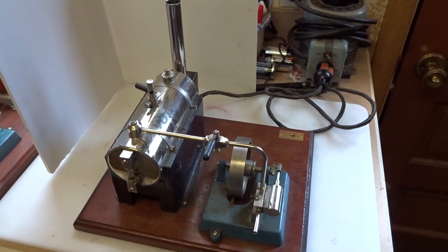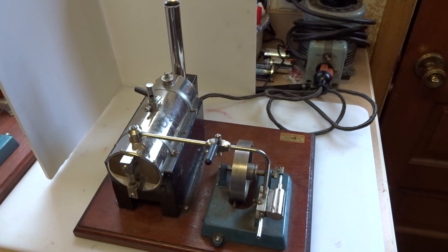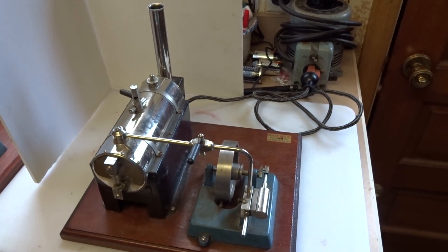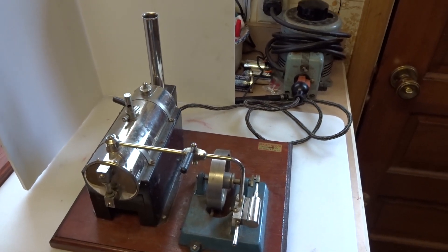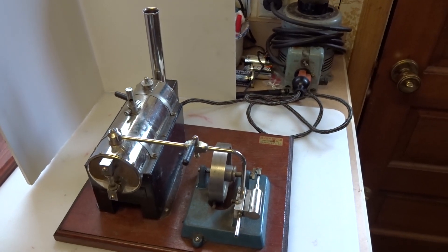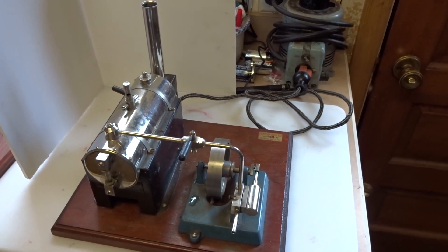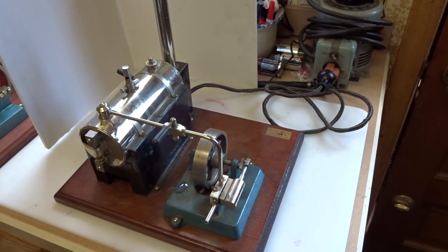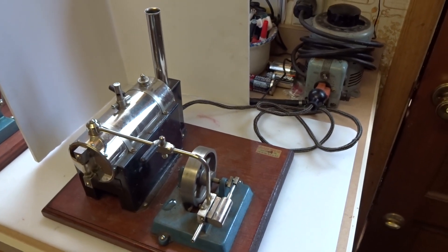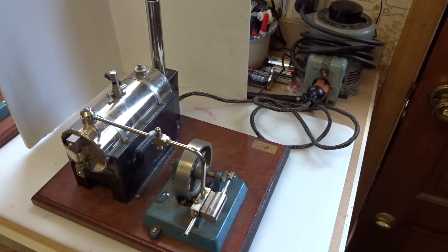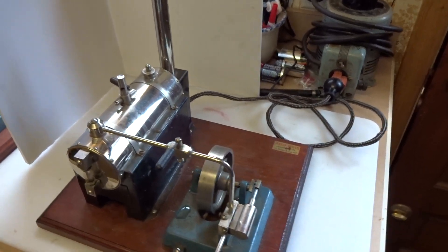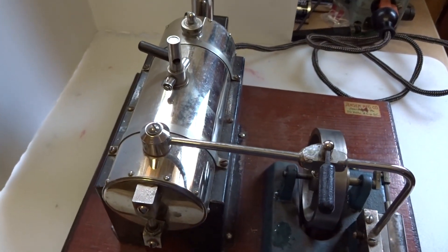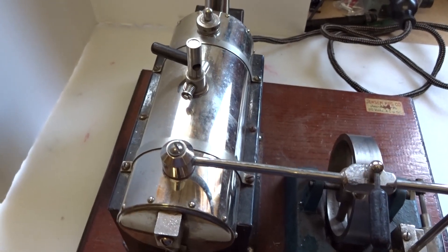This is a Jensen 5 riveted boiler steam engine I found today at a flea market in the little town of Punxsutawney, PA. Punxsutawney is only known for being the place where the groundhog comes out to tell us if we have six more weeks of winter. They have a little flea market there once a month, and I happened to pick up this nice riveted boiler Jensen 5.